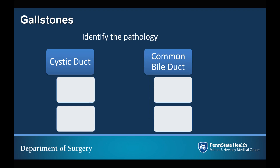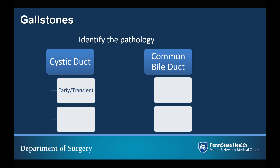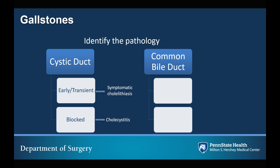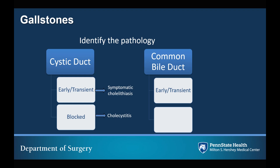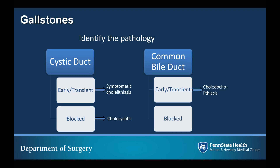The pathology of gallstone disease stems from both the location of the gallstone and the chronicity of the resultant obstruction of the biliary system. In gallstones located in the cystic duct, early or transient obstruction causes symptomatic cholelithiasis. If that obstruction becomes permanent, that results in cholecystitis. When the stone is present in the common bile duct with early or transient obstruction, that is called choledocholithiasis. With permanent blockage of the common bile duct from a gallstone, that results in ascending cholangitis as well as gallstone pancreatitis.